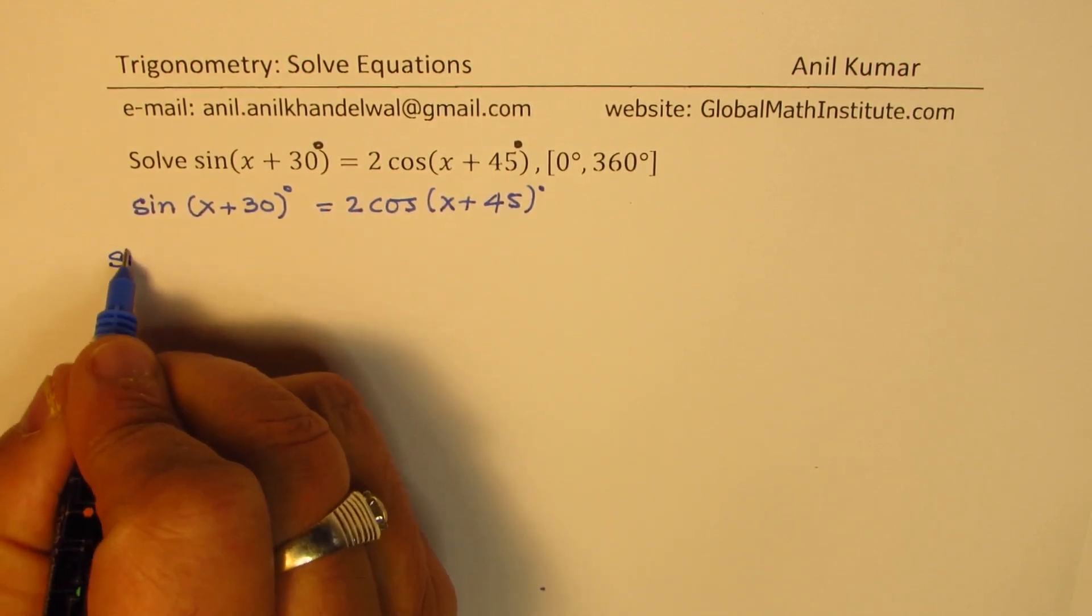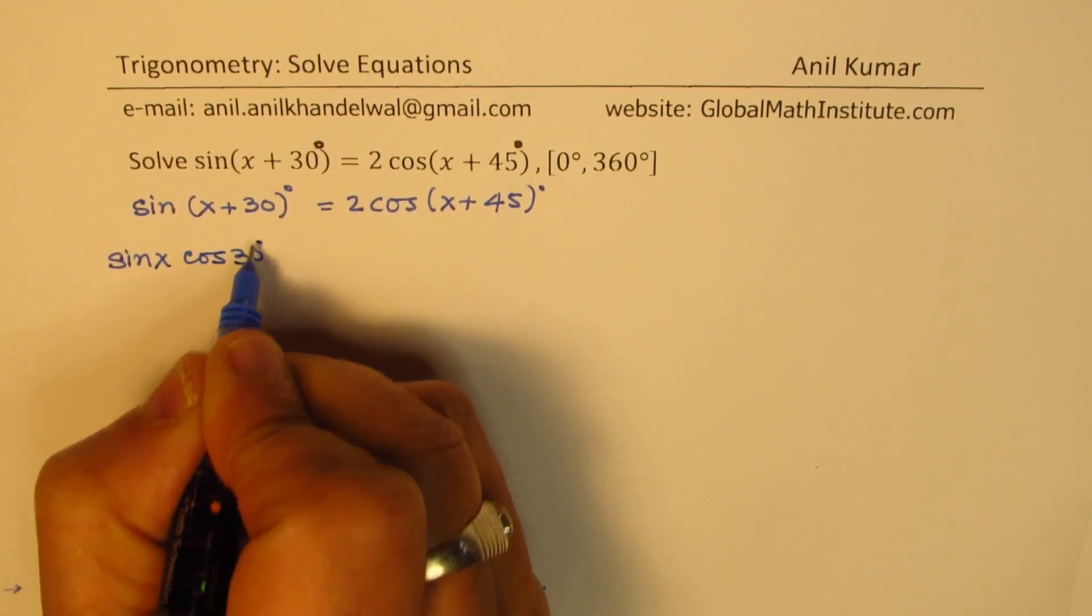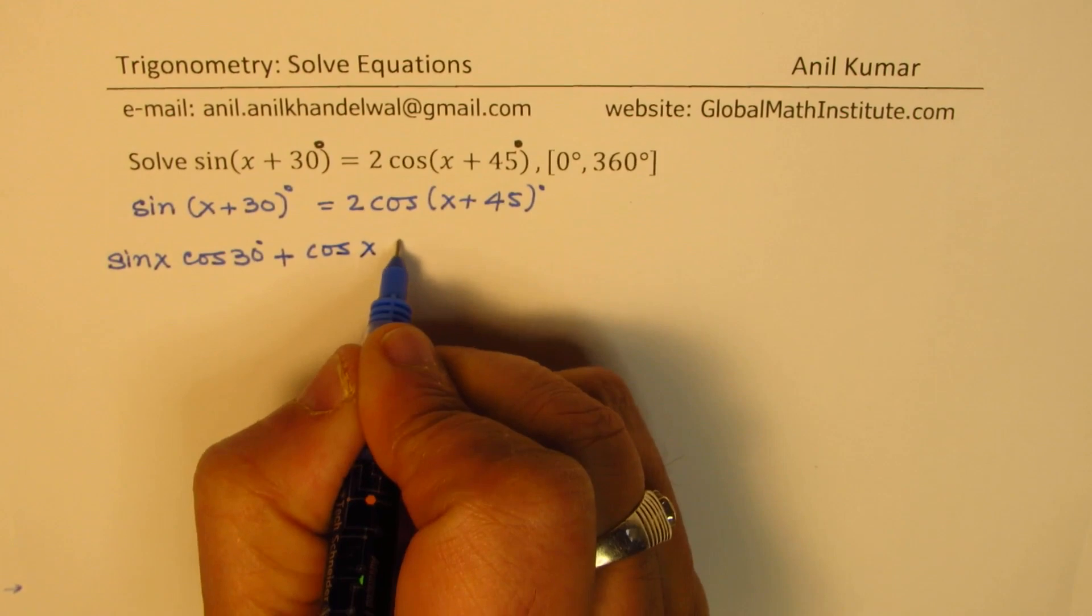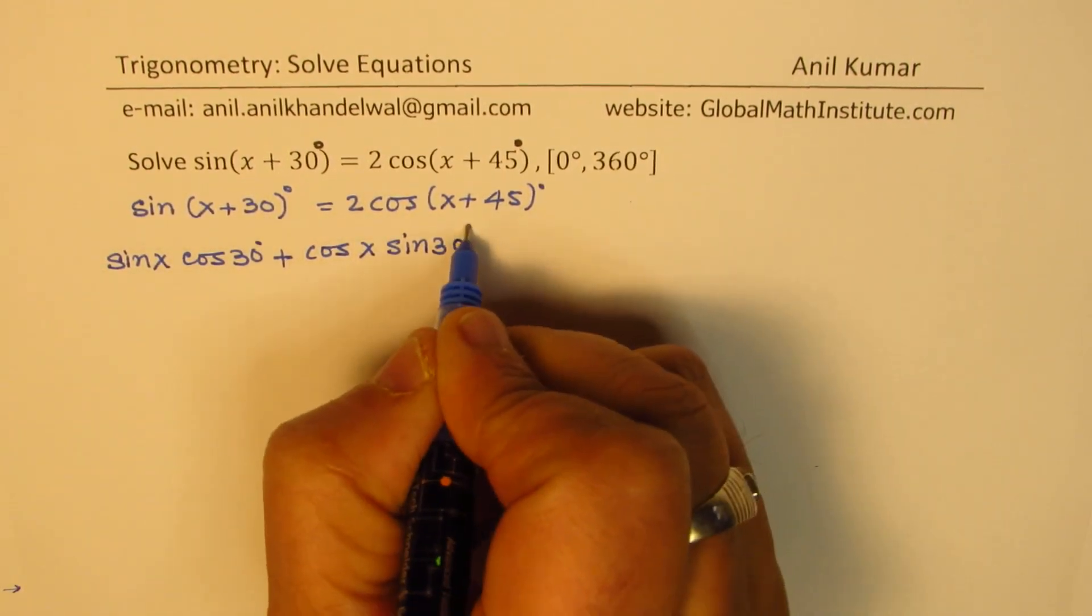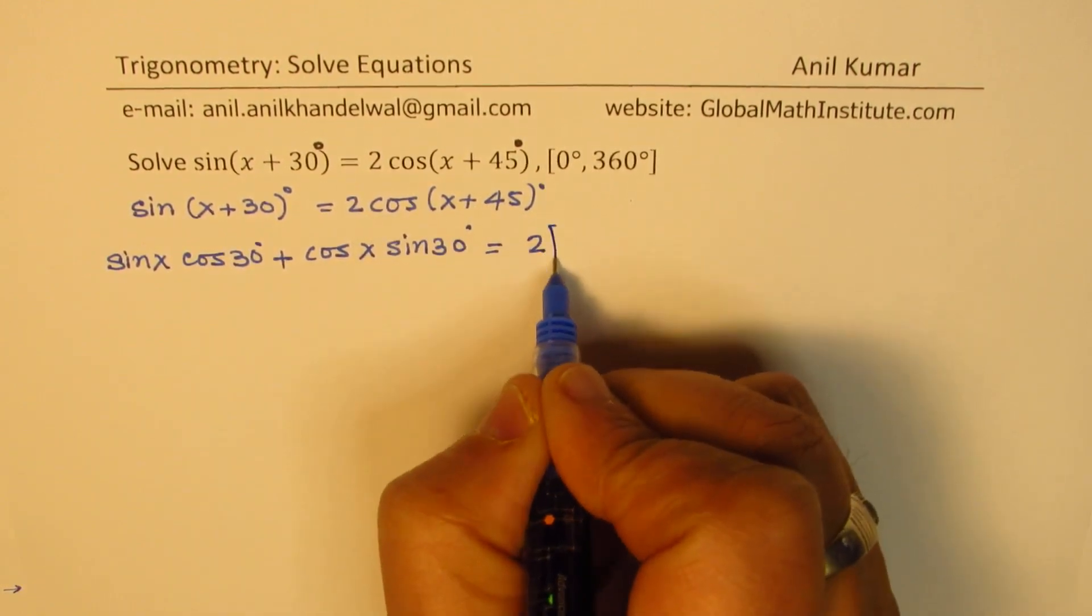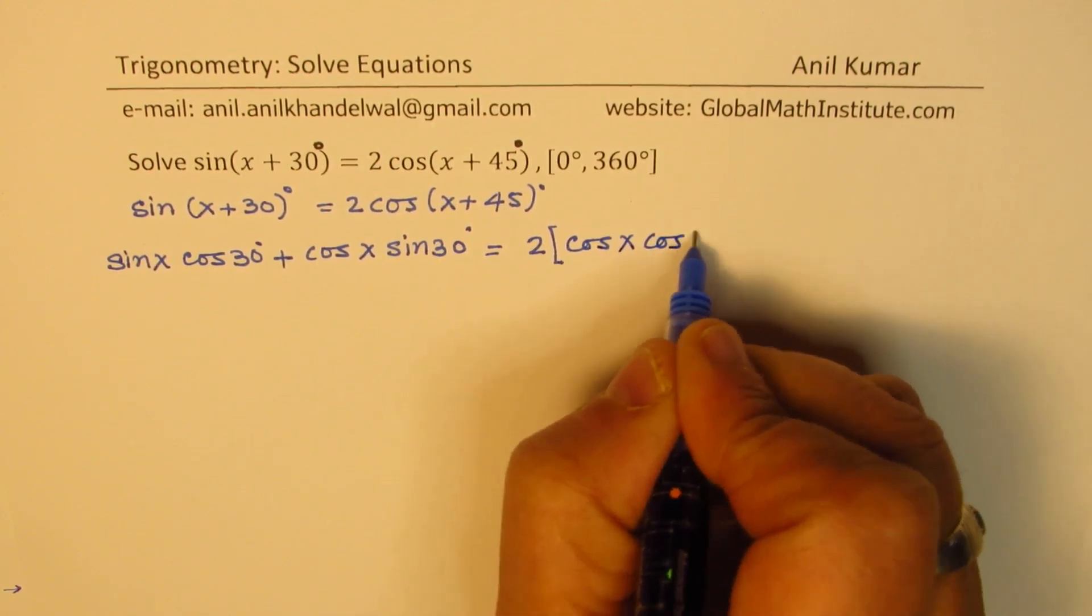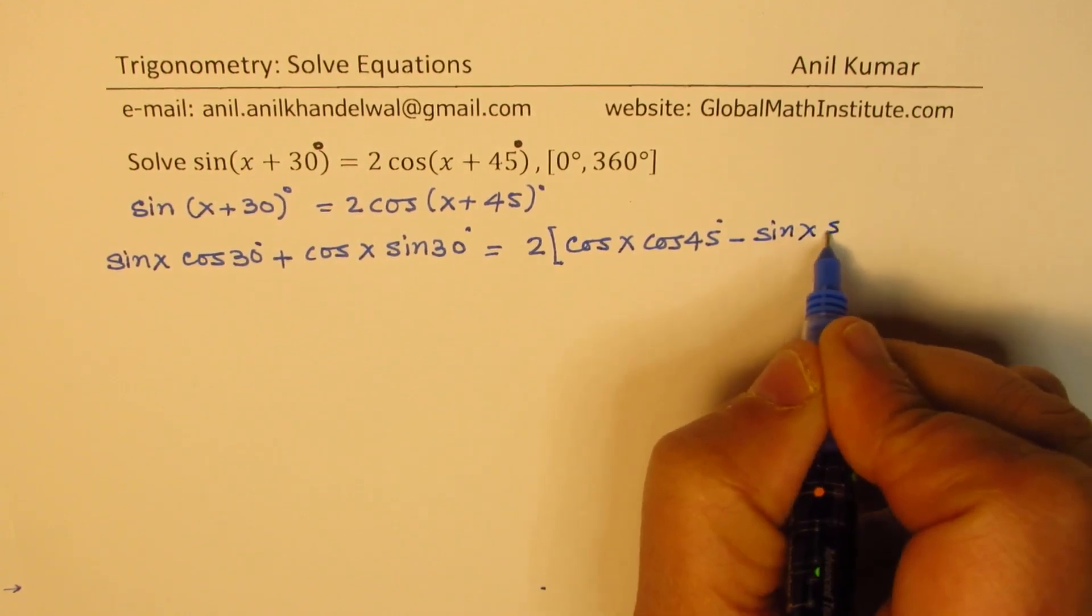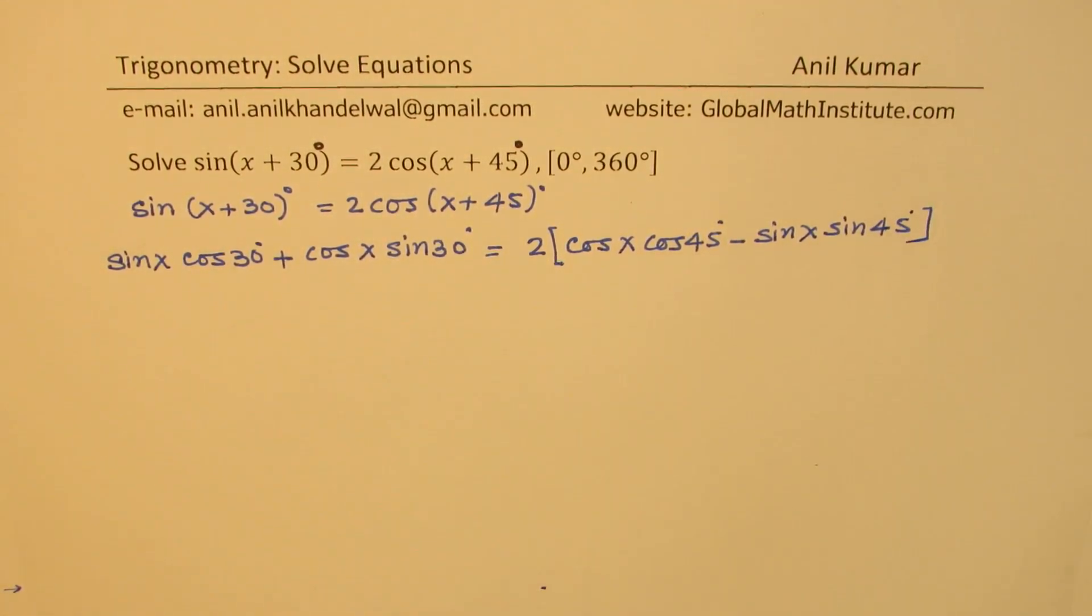You get sin x cos 30 plus cos x sin 30 equals to 2 times (cos x cos 45 - sin x sin 45).